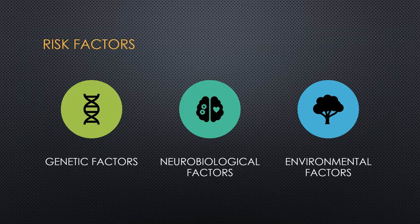As far as risk factors, genetic factors are significant — substance use disorders such as cannabis, cocaine, and opioids typically run in families. As far as neurobiological factors, the major neurotransmitters involved in developing substance use disorders are the opioid, catecholamine, and GABA systems.